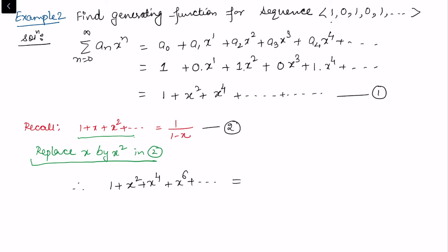This has the same generating function as 1/(1 - x²), since we did the replacement x → x² in the right-hand side of equation 1 as well. So this gives us the generating function for the desired sequence.